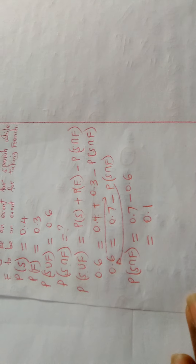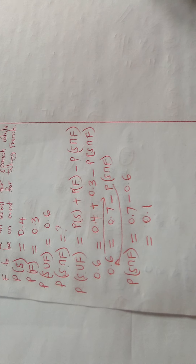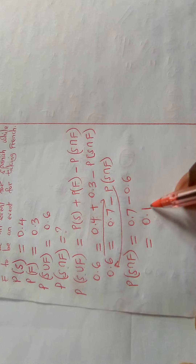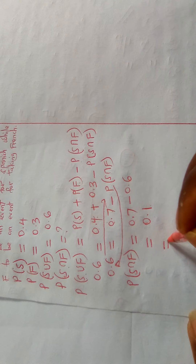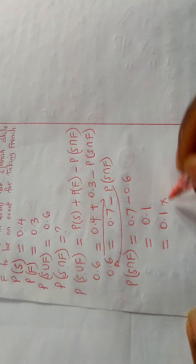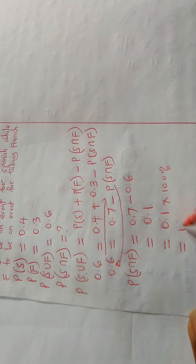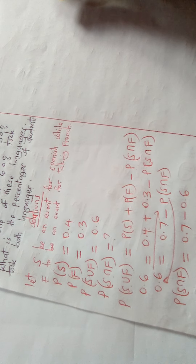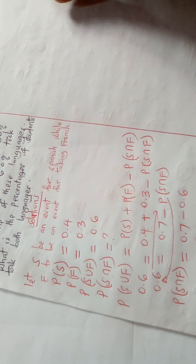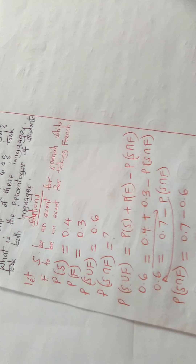We've been asked to find the percentage, so we convert 0.1 to a percentage by multiplying by 100: 0.1 × 100 = 10%. Therefore, 10% of the students took both Spanish and French languages.